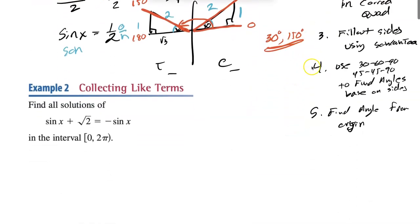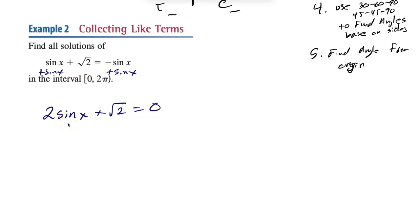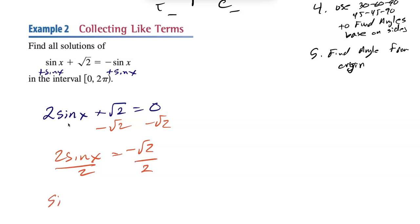Now that we know the process, let's do more and also work in radians. This equation is a bit more difficult. I want to collect like terms, so I'll add sine of x to both sides. We get 2 sine of x plus √2 equals 0. Subtract √2 from both sides: 2 sine of x equals negative √2. Divide by 2: sine of x equals negative √2 over 2.